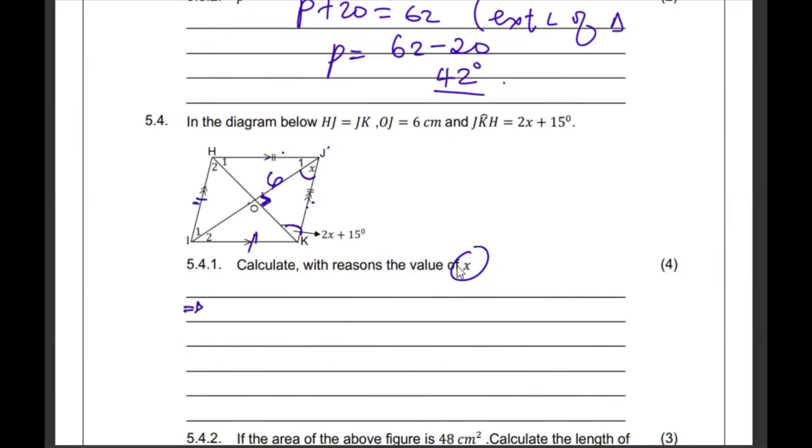So, what we're going to say, we're going to say 90 plus X plus 2X plus 15 should give us 180 degrees interior angles of triangle OJK. Collect the like terms. 3X. 15 and 90 is going to be 105 is equal to 180. Then, let's move the 105 that side. We're going to get 75. Divide both sides by 3. Meaning that our X is just 25.